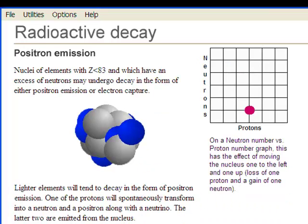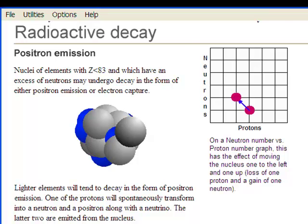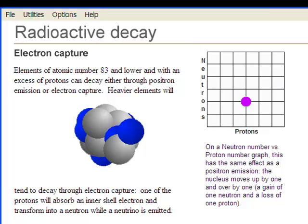A positron can also be emitted. This has the opposite effect to beta emission, raising the number of neutrons by 1 and lowering the number of protons by 1. Electron capture has the same effect as positron emission.